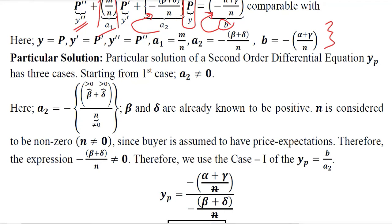The first thing that we observe is the value of b to see if we are dealing with a homogeneous or non-homogeneous case. Here we have a non-homogeneous case because b is not equal to 0. That is possible because α and γ are both positive numbers, and n is also some non-zero number. We have already assumed this because it shows the price expectations on the demand side.